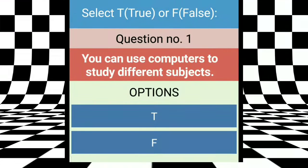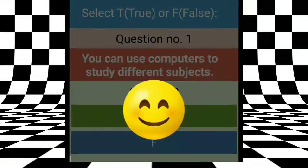Now, here we have true-false. The first question is, you can use computers to study different subjects. Means, hum computer ko use kar sakti hai to study different subjects ki. Is it true? Yes. We can do the study using the computer. So, this is true. Right answer.